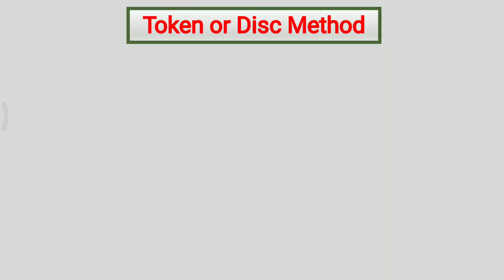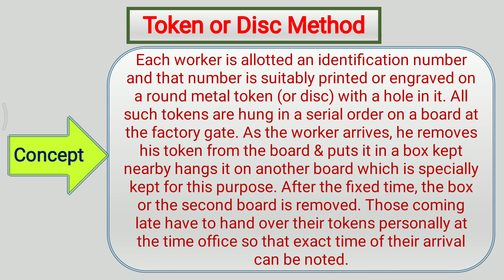Each worker is allotted an identification number and that number is suitably printed or engraved on a round metal token or disk with a hole in it. All such tokens are hung in a serial order on a board at the factory gate. As the worker arrives, he removes his token from the board and puts it in a box kept nearby and hangs it on another board which is specially kept for this purpose.